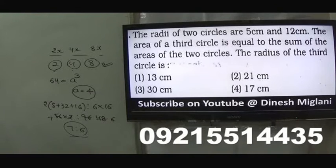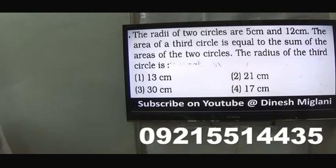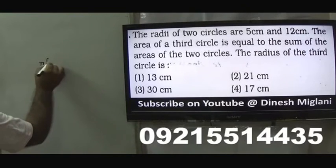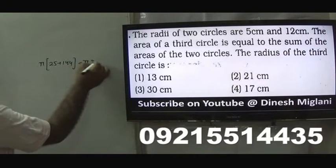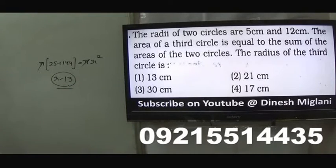Next question: the radius of two circles are 5 and 12. The area of a third circle is equal to the sum of the areas of the two circles. We have to find the radius of the third circle. Area = π(25) + π(144) = π(169). Cancel π. R equals 13. So the radius of the third circle is 13 centimeters. First option is my answer.